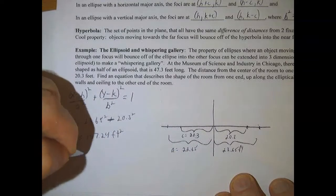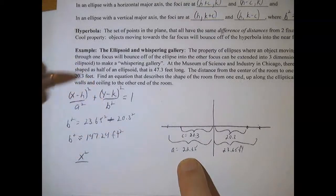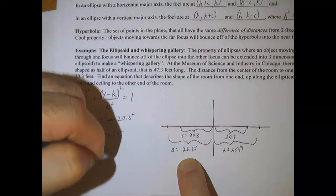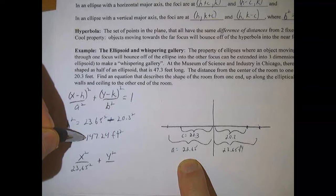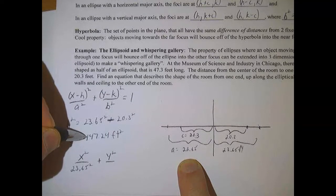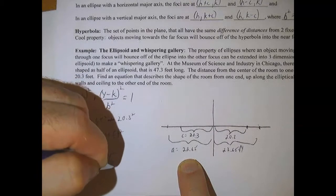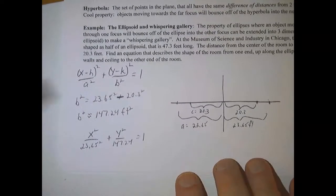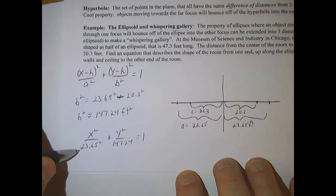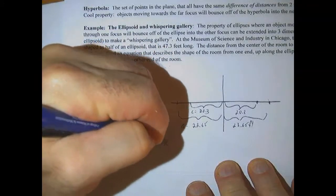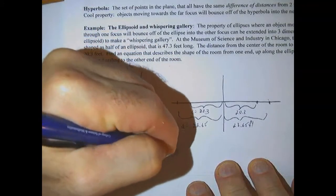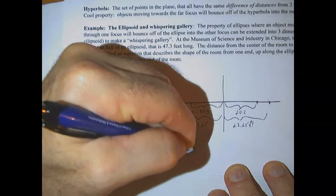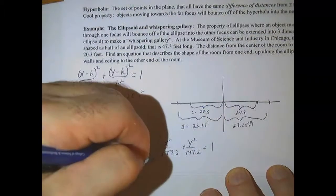So we can just say x squared over a squared, which is 23.65, plus y squared over b squared, which we just found to be 147.24. And you can leave it just like that, or you can square this, which is about 559.3. So we can write this as x squared over 559.3, plus y squared over 147.2, equals 1. There's our equation of the ellipse.